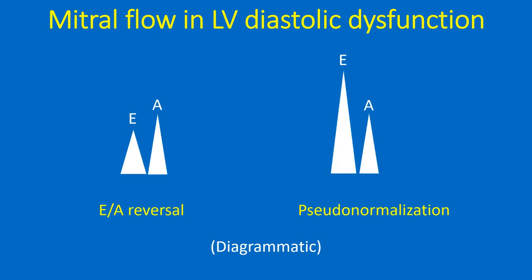As the severity of diastolic dysfunction increases, the A-wave becomes taller than the E-wave — a phase known as E-by-A reversal. Still further, the E-wave becomes taller again due to elevated left atrial pressure, mimicking a restrictive filling pattern. This is a type of pseudo-normalization of the mitral flow pattern.